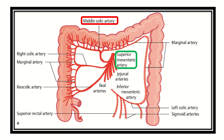Here we can see this is the transverse colon. It starts from the hepatic flexure on the right side and ends at the splenic flexure on the left side. If a tumor occurs in the transverse colon, a right hemicolectomy is done, and we can see the blood supply of this transverse colon.